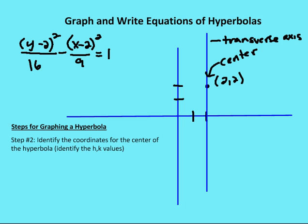My second step is to identify the coordinates for the center of the hyperbola — all I'm doing is identifying the h and k values. The h value is associated with x, and the k value is associated with y. I know that the h value is two and the k value is two, based on the formula. So I plot my center at (2, 2) and draw my transverse axis. The equation for the transverse axis is x equals two.